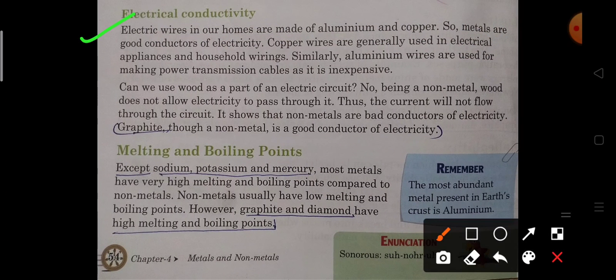Electric wires in our home are made up of aluminium and copper, so metals are good electric conductors. Copper wires are generally used in electrical appliances and household wiring. Aluminium wires are used for making power transmission cables as it is inexpensive compared to copper. Copper is used in homes to reduce energy loss in the form of heat.